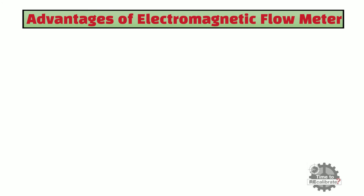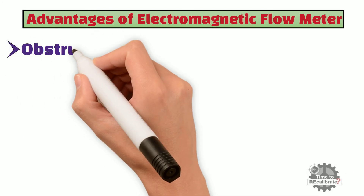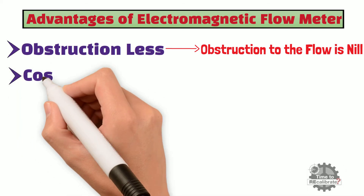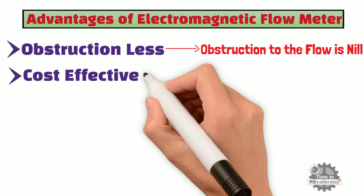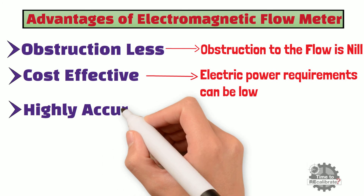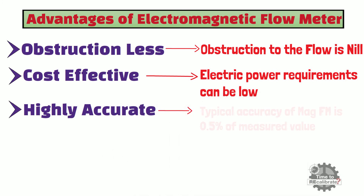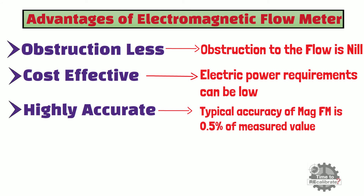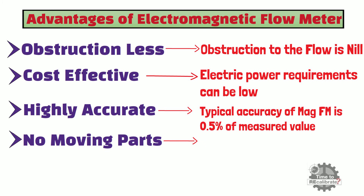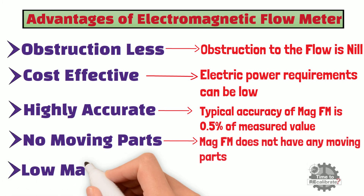The advantages of electromagnetic flowmeters are: first, they are obstructionless — obstruction to flow is almost nil, making them suitable for heavy suspensions including mud, sewage, and wood pulp. Second, they are cost-effective, with low electric power requirements, particularly with pulse DC types. Third, they are highly accurate, with a typical accuracy of 0.5% of measured value. Fourth, they have no moving parts. And finally, they are almost completely maintenance-free.